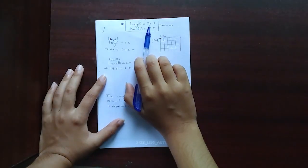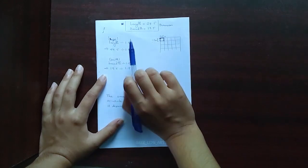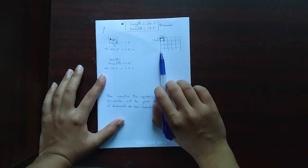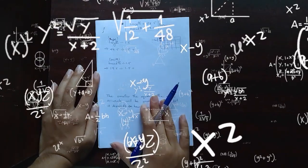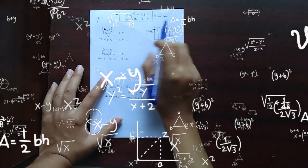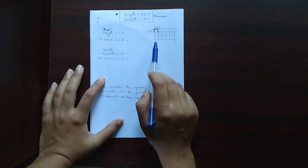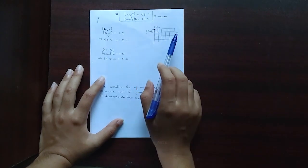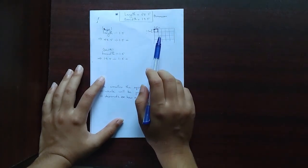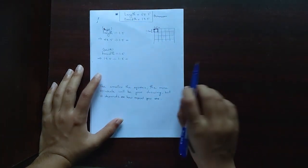We have the length as 28.5 centimeters and the breadth as 19.5 centimeters. Now we'll see how many rows and columns are required for the grid. So let's see, usually I take 1.5 centimeter squares to build the grid. You can take 1 centimeter or 2 centimeter or 3 centimeter, it's up to you, but here I'm taking 1.5 centimeter squares to build the grid.